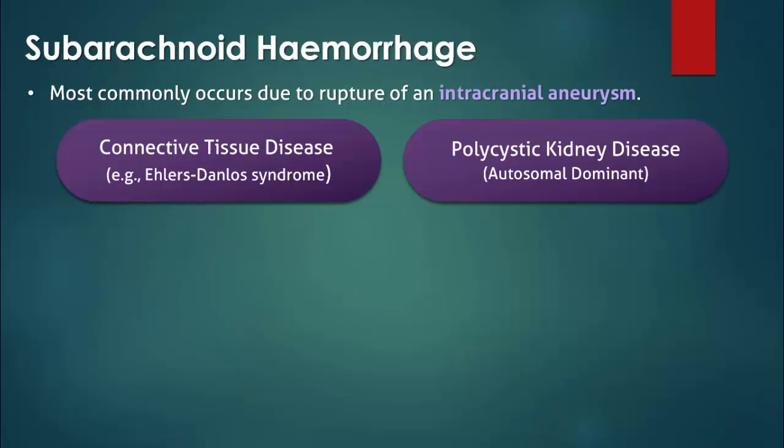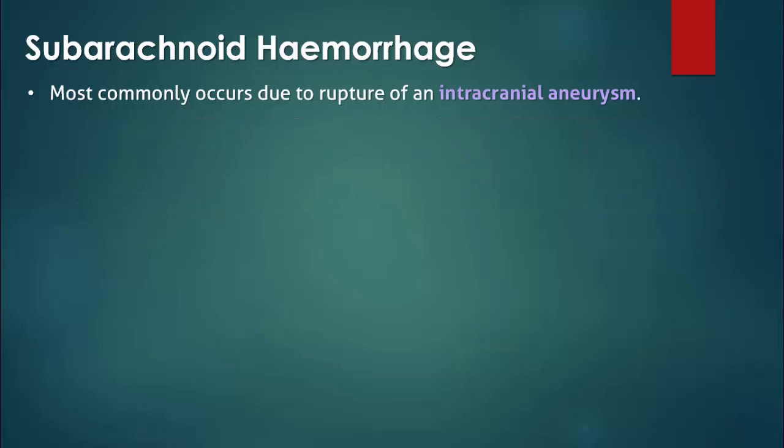A family history of a subarachnoid hemorrhage or predisposing condition can also be very helpful. Less common causes include rupture of an arteriovenous malformation, trauma, and some sympathomimetic drugs such as cocaine.